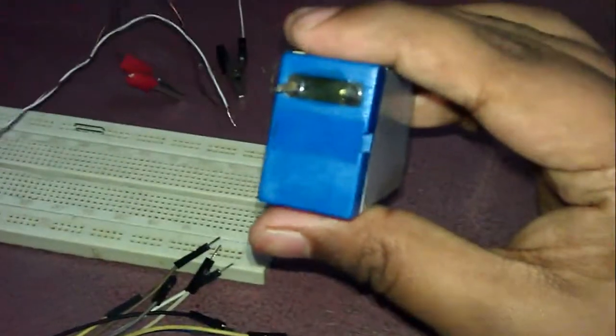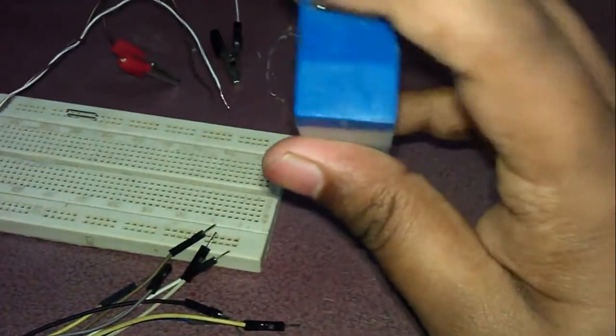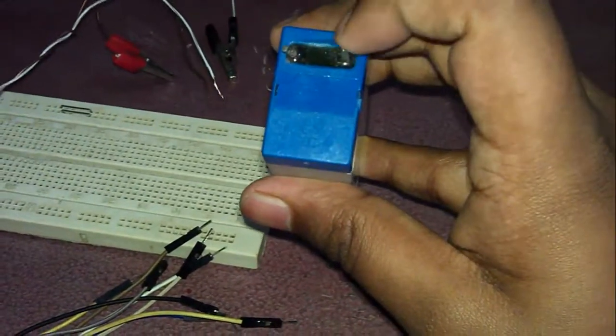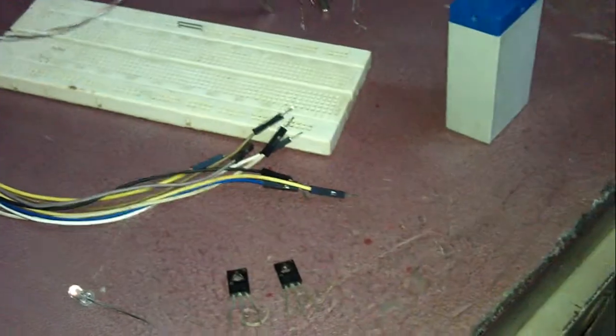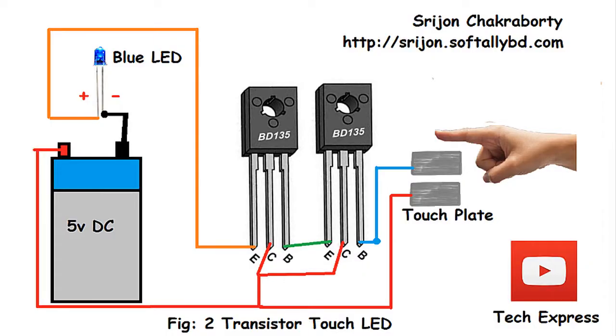Let's see our circuit diagram next. Here is our simple circuit diagram. You have to touch both of the touch plates, then the blue LED will light up. When you remove your finger, the blue LED will turn off.